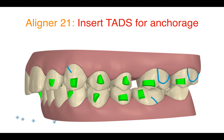I solved this case using my protocol of upper molar distalization assisted by miniscrews, where the first thing that I did was to distalize 7 and 6. In aligner 21, when 6 and 7 were in Class 1, then I put a miniscrew for maximum anchorage, and then I retrieved from 5 to 5.